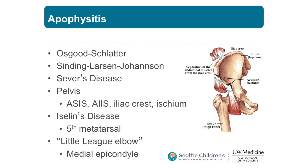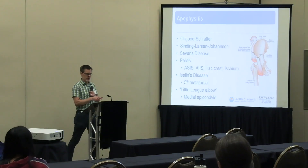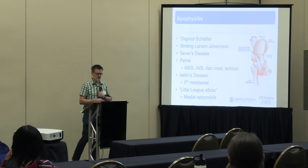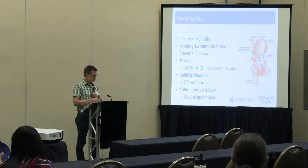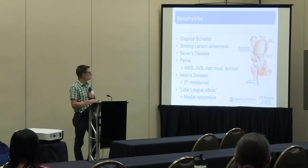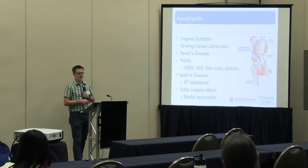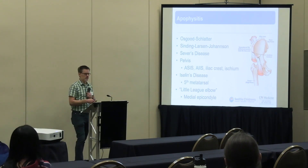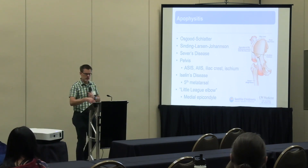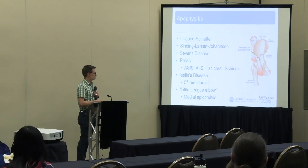There are apophysitis conditions all over the body. Osgood-Schlatter is at the tibial tubercle. Sinding-Larsen-Johansson is at the inferior pole of the patella. Sever's disease is at the calcaneus. There are several around the pelvis — those apophyses sometimes don't fuse until the late teens or 20s. Iselin's disease is at the base of the fifth metatarsal. Little League elbow is also an apophysitis. Key distinction: acute versus chronic onset matters here.